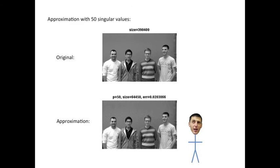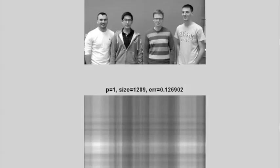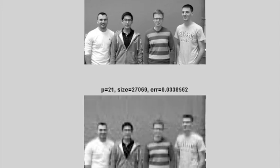As you can see, 50 singular values gives a mean approximation error of only 2%, and we've effectively reduced the memory footprint of the image from 390,000 to 64,000.